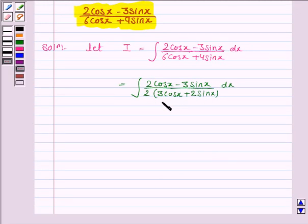Now we see that the derivative of 3cosx plus 2sinx is 2cosx minus 3sinx. So put t equal to 3cosx plus 2sinx.